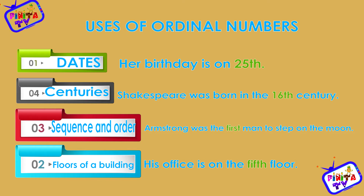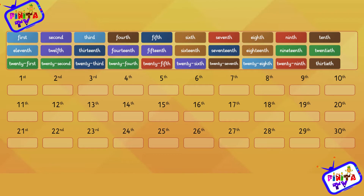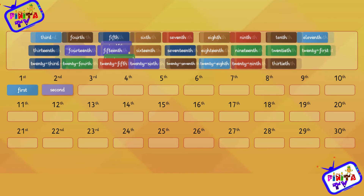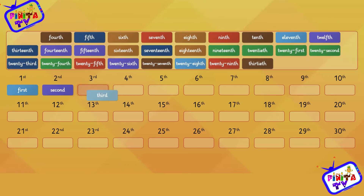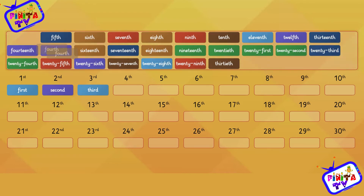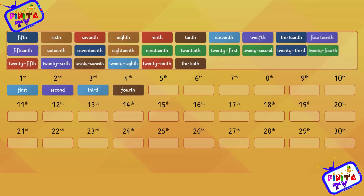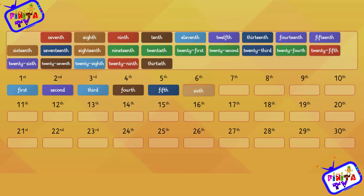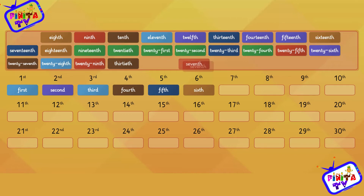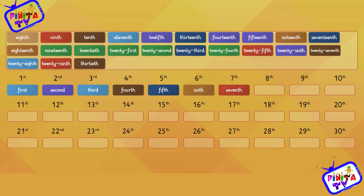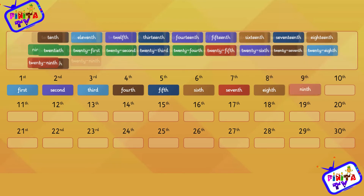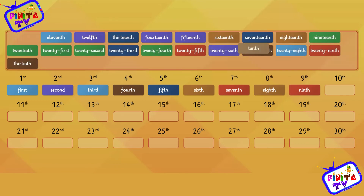Now let's count ordinal numbers. First, second, third, fourth, fifth, sixth, seventh, eighth, ninth, tenth.